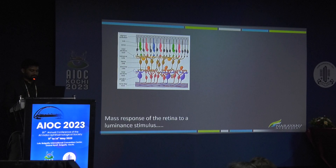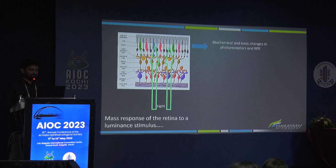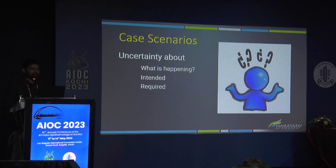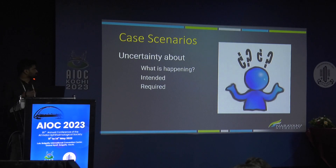This is the ERG, which is the mass response of the entire retina. It's where biochemical and ionic changes happen in the photoreceptor and RPE, which generates electrical potential recorded as an ERG. Let's go to the case scenarios — I'm going to describe cases where there is uncertainty about what is happening, what is intended, and what is required.